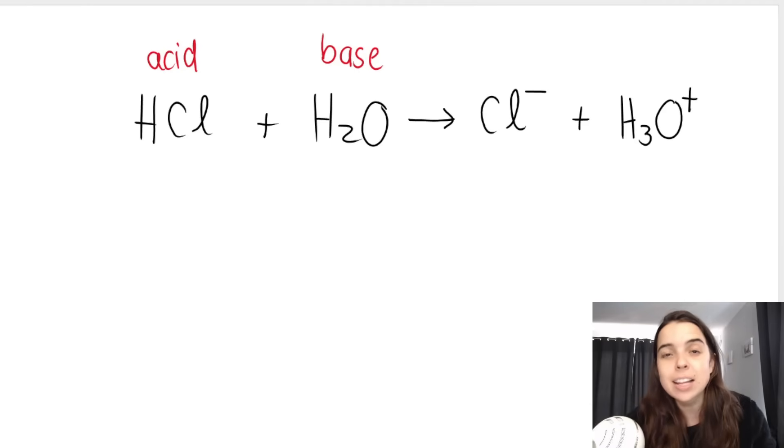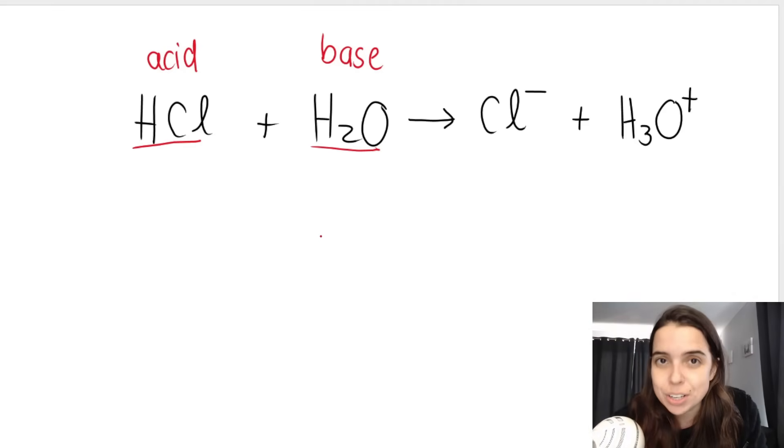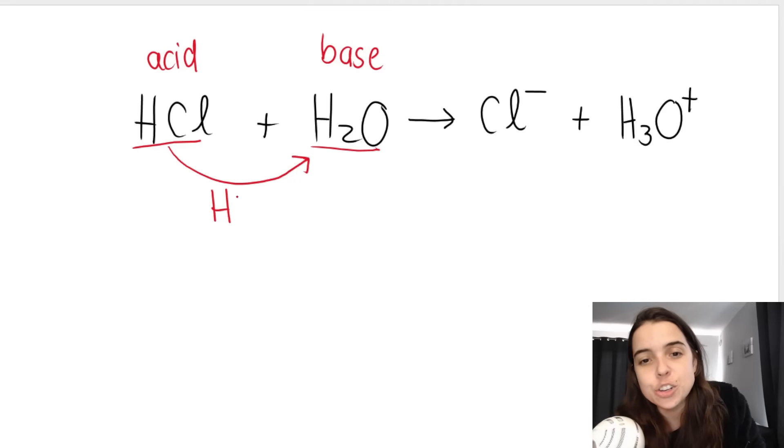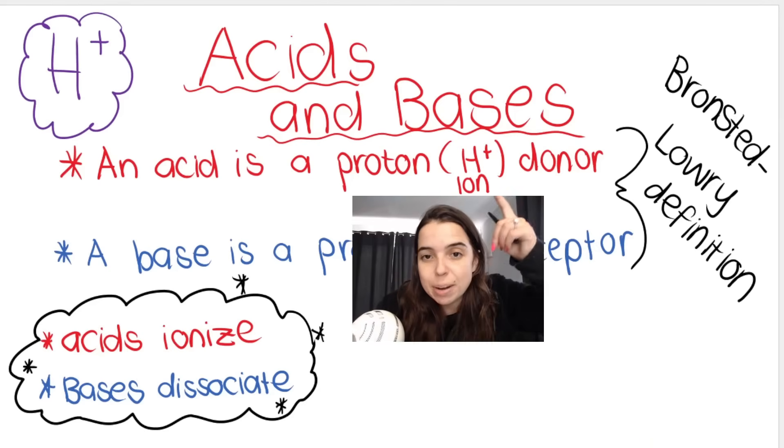Just to show you how the Bronsted-Lowry definition works, I have an acid HCl, a strong acid. In this reaction I'm reacting HCl with water. This is called ionizing with water, when we take the acid and it reacts with water. Water is involved in the chemical reaction as one of the reactants. Remember, acids are defined as proton donors, which means the acid should give away an H+. The acid gives away an H+, remember an H+ is a proton. A proton is an H+ ion. Protons are positive, H+ positive, a positive hydrogen, a hydrogen ion.